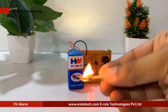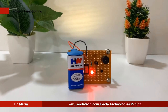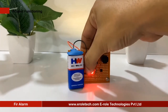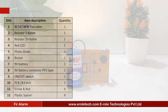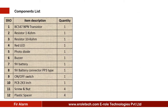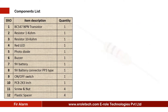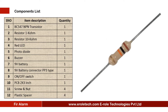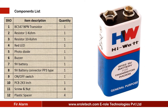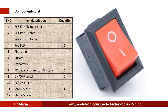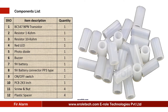In this video we will learn how to make a fire alarm with the help of some electronic components like transistor, photodiode, buzzer, etc. The components needed are: one NPN transistor BC547, one 1 kilo ohm resistor, one 10 kilo ohm resistor, one red LED, one photodiode, one buzzer, a 9 volt PP3 battery with connector, an on-off rocker switch, one zero PCB, four screws with nuts, and four plastic spacers.